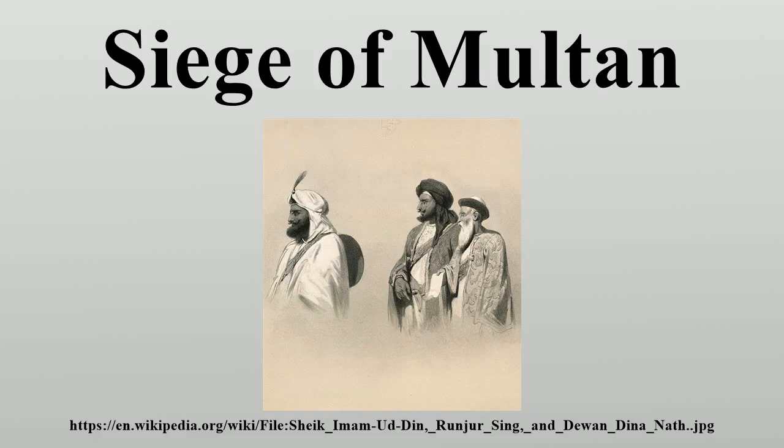Meanwhile, Mulraj was reinforced by several other regiments of the Khalsa, the former army of the Sikh kingdom, which rebelled or deserted. He also took other measures to strengthen his defences, digging up guns which had previously been buried and enlisting more troops. In early June, Edwards began to lead an army against Multan. On 18 June, his leading troops crossed the Chenab River on a ferry boat.